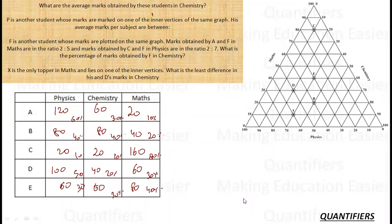Let's look at the second question. P is another student whose marks are marked on one of the inner vertices. Remember, vertex. It is not in between. It is on one of the inner vertices. But I know for sure that for any point, the total is going to be 100% or the total is going to be 200 marks. So the total is going to be 200 for any student if his scores are lying on the innermost vertex. So if the total is 200, the average is going to be 200 divided by 3, 66.66. This is what the average will be.